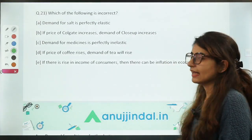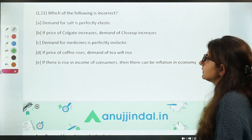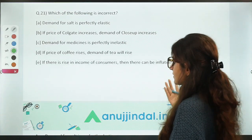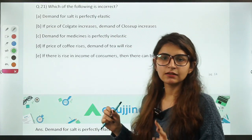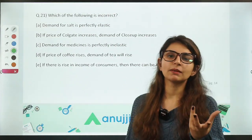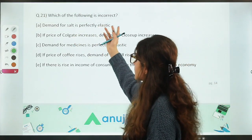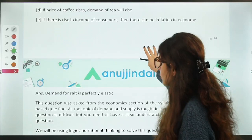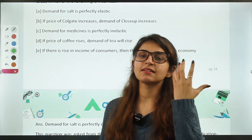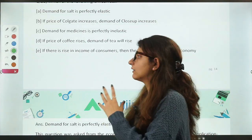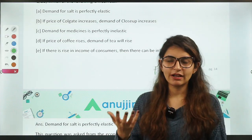Which of the following is incorrect? Please read questions carefully — do not confuse 'incorrect' with 'correct.' This is a question on demand and elasticity of demand. According to the products given in options, one must identify the elasticity type. The answer here is: demand for salt is perfectly elastic — this is incorrect because salt is a necessary item used by every household regardless of income, so its demand is actually perfectly inelastic, not elastic.